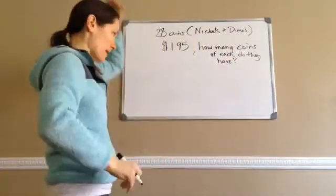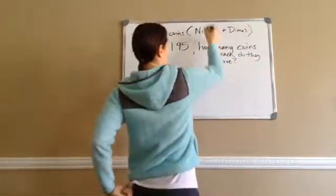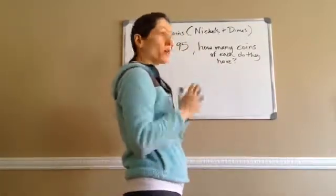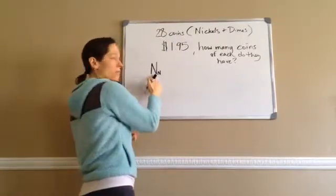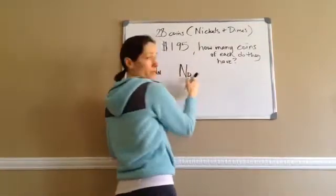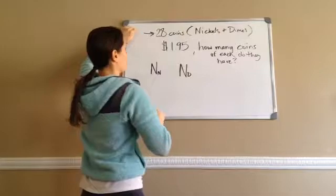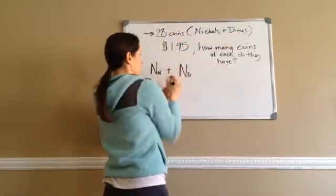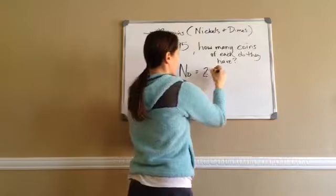Using the methods we've learned previously, we're actually going to make sense of them. So you're going to come up with two different equations. This NN is going to be the number of nickels, and this ND is the number of dimes. The first equation we're going to come up with is from the information they gave us at first: we have 28 coins, and it's nickels and dimes. So I have number of nickels plus number of dimes — that equals 28 coins.